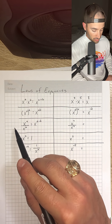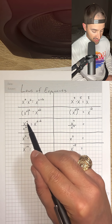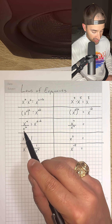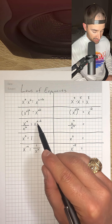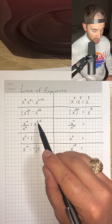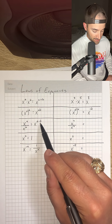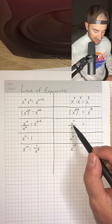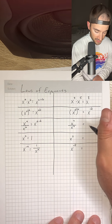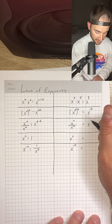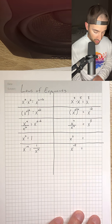Next we have our quotient rule, which is x to the a over x to the b is equal to x raised to the power of a minus b. So x to the seventh over x to the fourth would be equal to x to the third power.